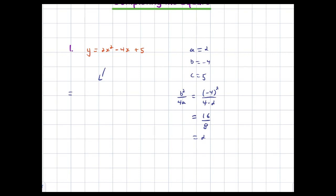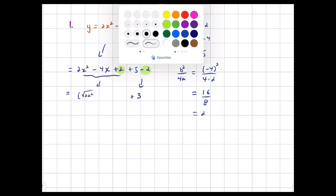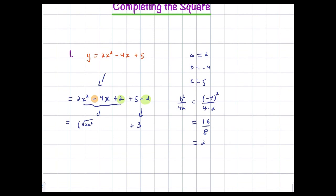We're going to get this equal to 2x² − 4x + 2 + 5 − 2. There is the adding and subtracting — there is the sneaky zero. So 5 − 2 becomes plus 3. And this is our perfect square term. This is going to become the square root of 2 times x. Now, this is one of the things that throws people off a little bit. In the derivation video, we saw that we were going to end up with √a · x + b/(2√a).